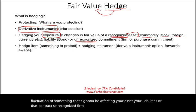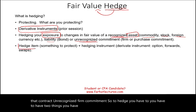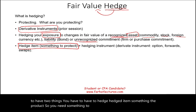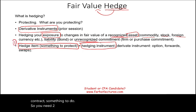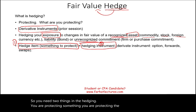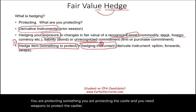To hedge, you need two things. You need the hedged item — something to protect. And you need the tool to protect it, which is the hedging instrument — which could be an option, forward, swap contract. Think of it like protecting a castle: you have the castle to protect, and you need weapons or soldiers to protect it. In hedging, you have an asset and you need something else — a call option, put option, forward contract, swap contract — to protect it.